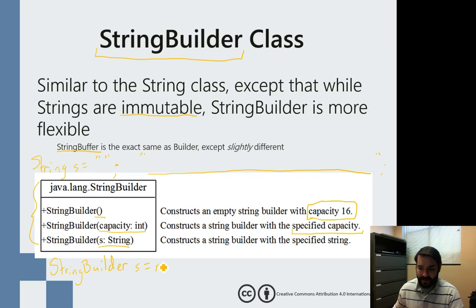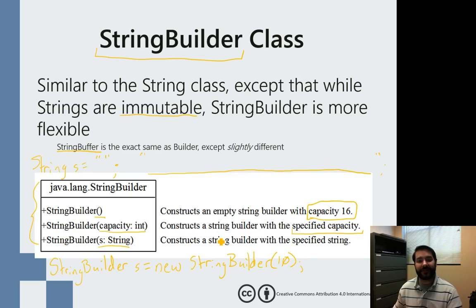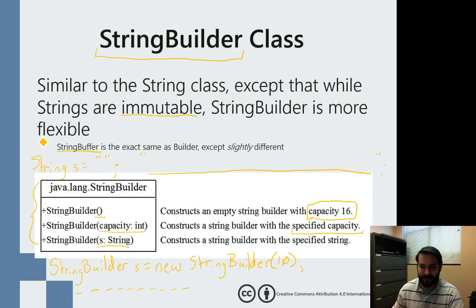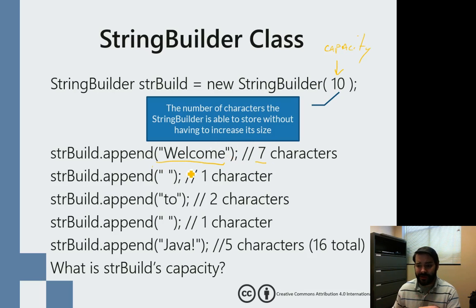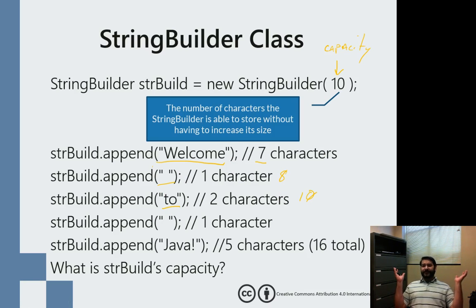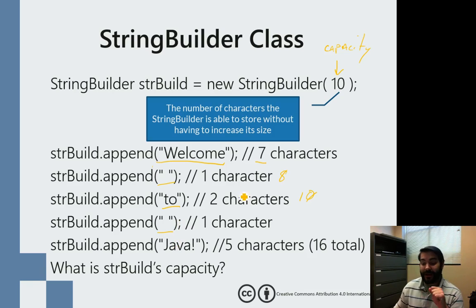With StringBuilder, you can specify a capacity — say, 10 characters. If I add the word 'welcome' that's already 7 characters, then a space makes 8, then the word '2' brings me to 10. At that point you might think we can't do anything else. But guess what? Java and StringBuilder don't freak out — what happens is it automatically increases the capacity. So even when we're at 16 characters total, there's suddenly enough room to keep working.